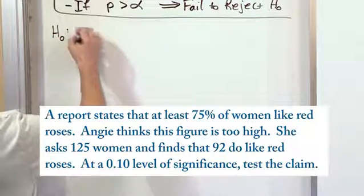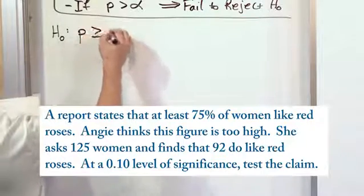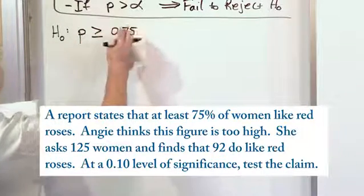Notice we don't use mu. We say P, the population proportion, greater than or equal to 0.75. This is the null hypothesis.